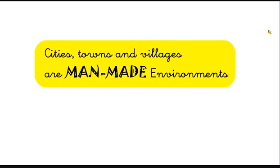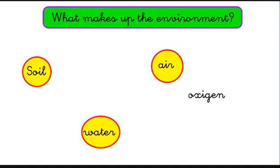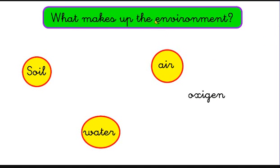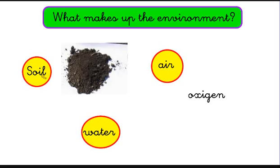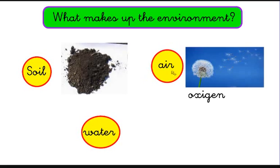So remember: natural and man-made environments. What makes up the environment? What is the environment made of? Mainly three things: the soil, the air, and the water.